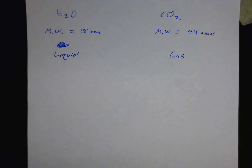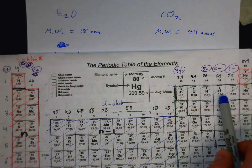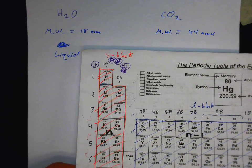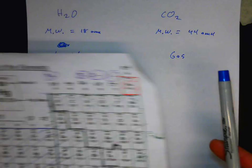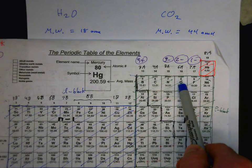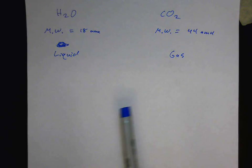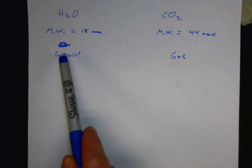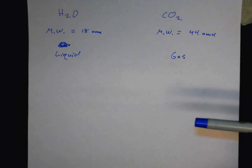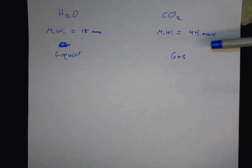Let's consider two molecules: water (H₂O) and carbon dioxide (CO₂). The molecular weight of water is 18 atomic mass units — 16 from oxygen and 2 from the two hydrogens. The molecular weight of carbon dioxide is 44 amu — 12 from carbon and 32 from the two oxygens. So water weighs less than carbon dioxide, yet interestingly carbon dioxide is a gas while water is a liquid. It seems counterintuitive — wouldn't we expect something heavier to be more likely to be a liquid?